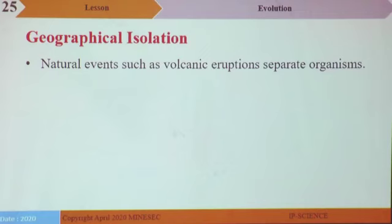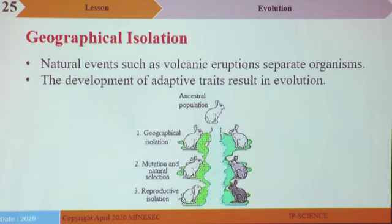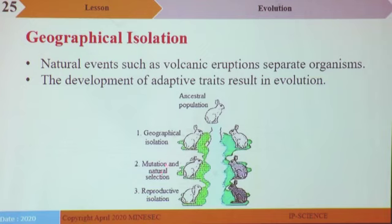Geographical isolation. Natural events such as volcanic eruptions can separate organisms. Once separated, the development of adaptive traits results in evolution. If an ancestral population of rabbits is separated by a river, geographical isolation comes into play. When separated for long, mutation and natural selection occur. Since the rabbits cannot cross the water, reproductive isolation takes place, and after a period of time even if these organisms come back together, they will be so genetically different that they cannot interbreed and will have formed two species.